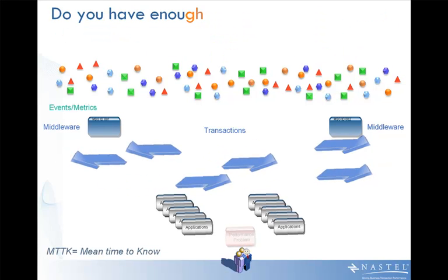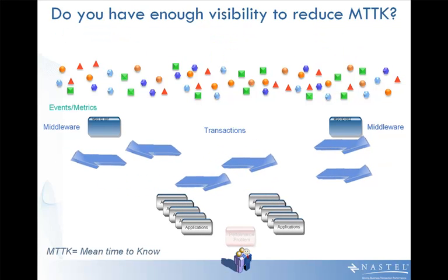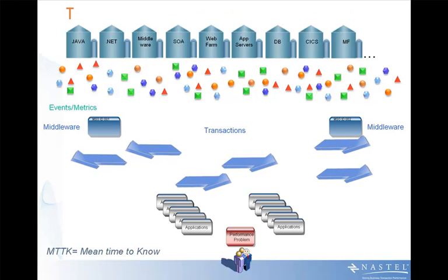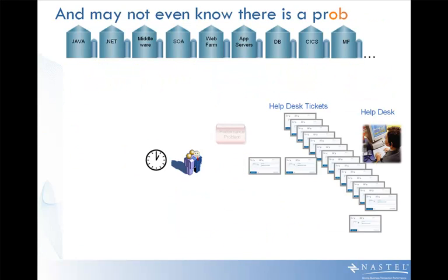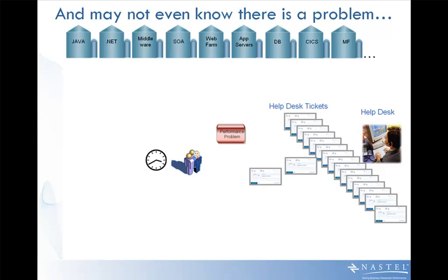So you have to ask yourself the question: do I have the visibility to reduce the mean time to know — to even know I have a problem? Traditionally, IT has used a silo approach. But unfortunately, many times they won't know there's a problem and the user is impacted.